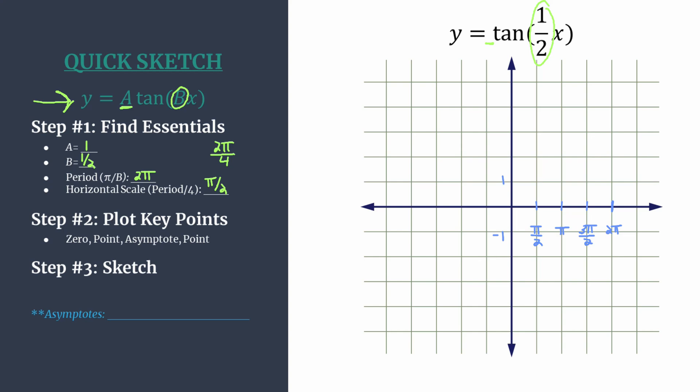Our key points pattern for tangent always starts at the origin and the pattern just goes zero, upper curve shaping point, vertical asymptote, lower curve shaping point. So let's do that. Put your zero on the origin or x-intercept.